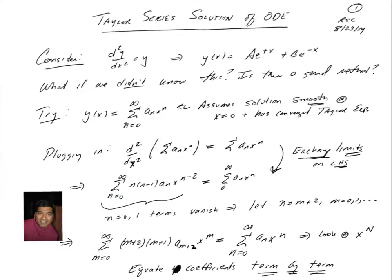Note that this series has the property that when n equals 0 or n equals 1 on the left-hand side, the terms vanish. So we can shift, we can let n equal m plus 2 and let m go from 0 to infinity. That's essentially ignoring the first two terms in the expansion and shifting the index by 2.